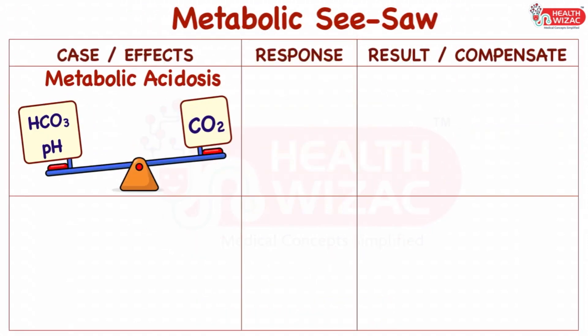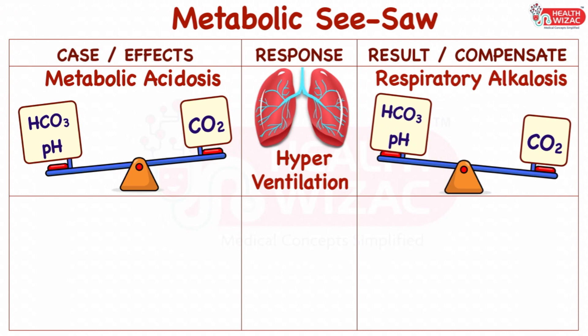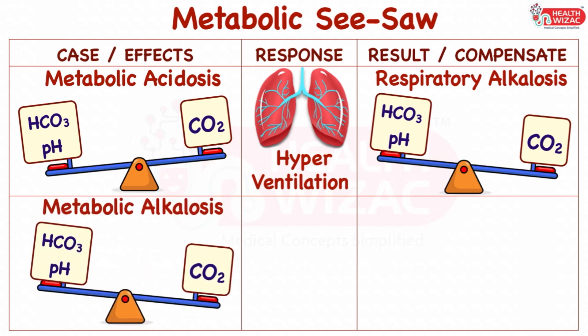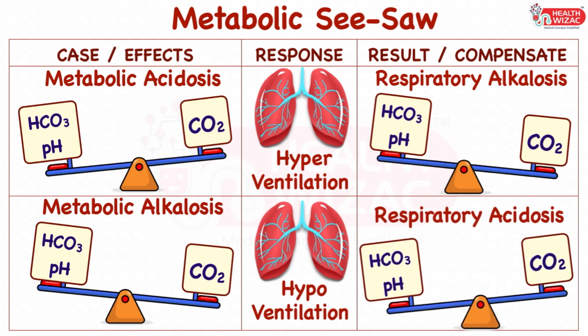Metabolic acidosis causes a decrease in HCO3 and pH levels and an increase in carbon dioxide level. To compensate, the body triggers the lungs and increases the rate and depth of respiration causing hyperventilation. This results in CO2 washout and the CO2 level falls, resulting in respiratory alkalosis. Metabolic alkalosis causes an increase in HCO3 and pH levels and decrease in CO2 level. To compensate, the body decreases the respiratory rate and depth, resulting in an increase in CO2 level and ultimately respiratory acidosis.